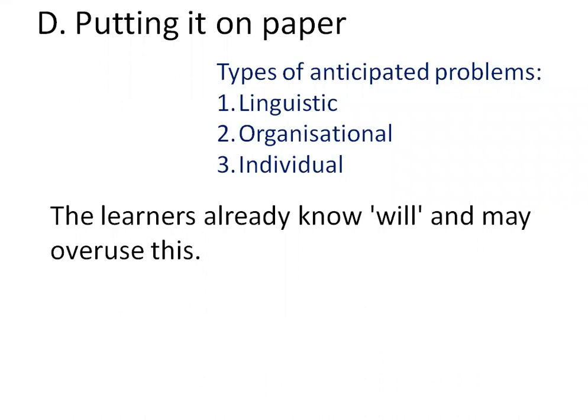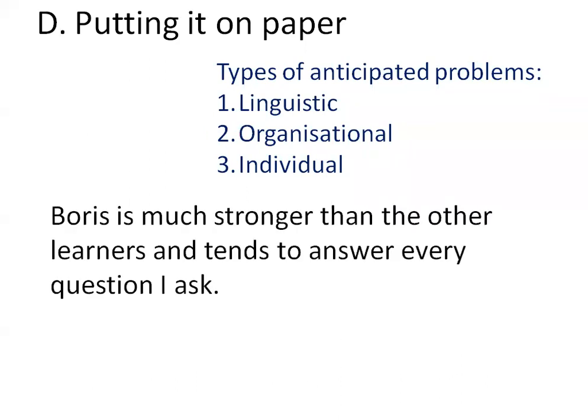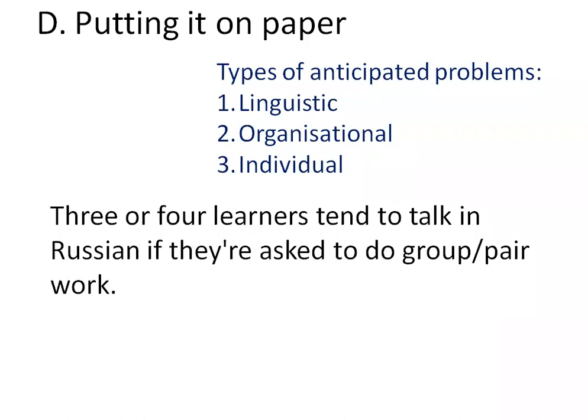Another problem: a pair work exercise requires an even number of learners, but one or more may not attend, leaving you with an odd number of students. What sort of problem is that? Organizational — absolutely. Next: Boris is much stronger than the other learners and tends to answer every question. What kind of problem is that? An individual problem, because it relates to one specific student. Next: three or four learners tend to talk in Russian during group or pair work. That could be organizational, or both organizational and individual.